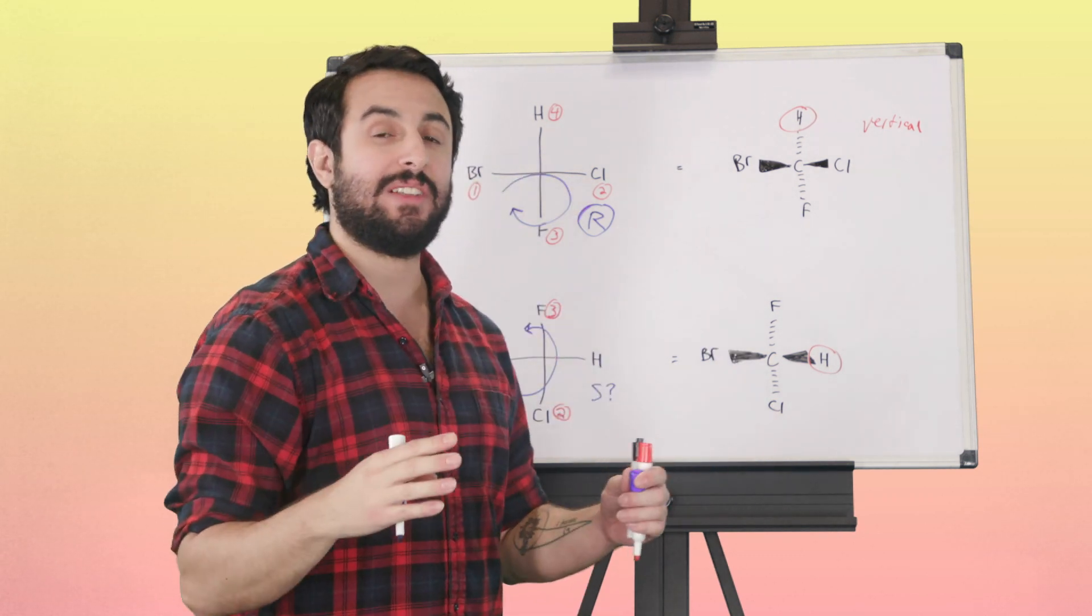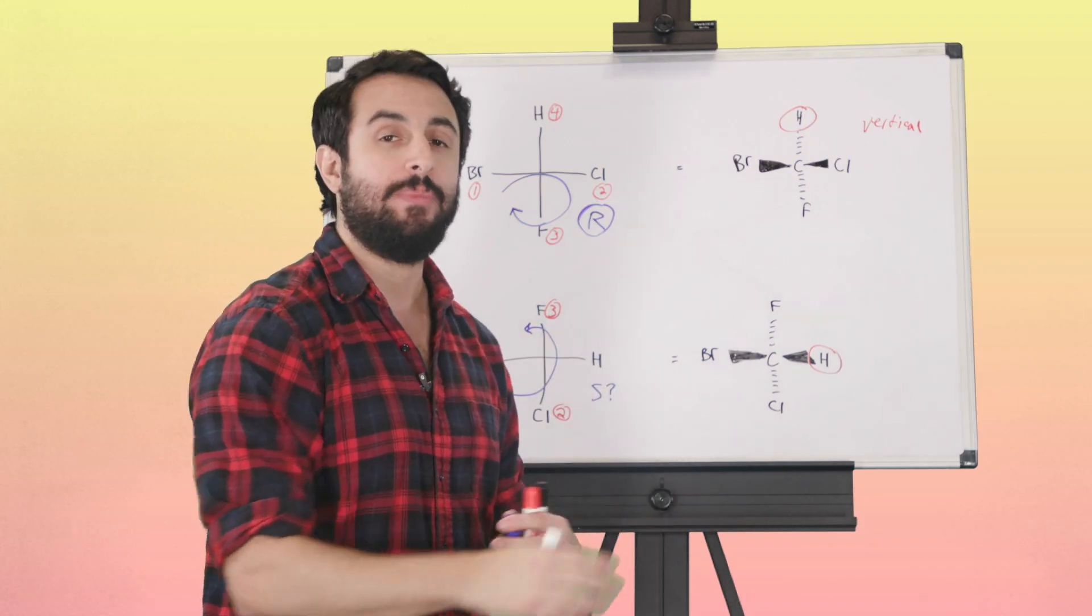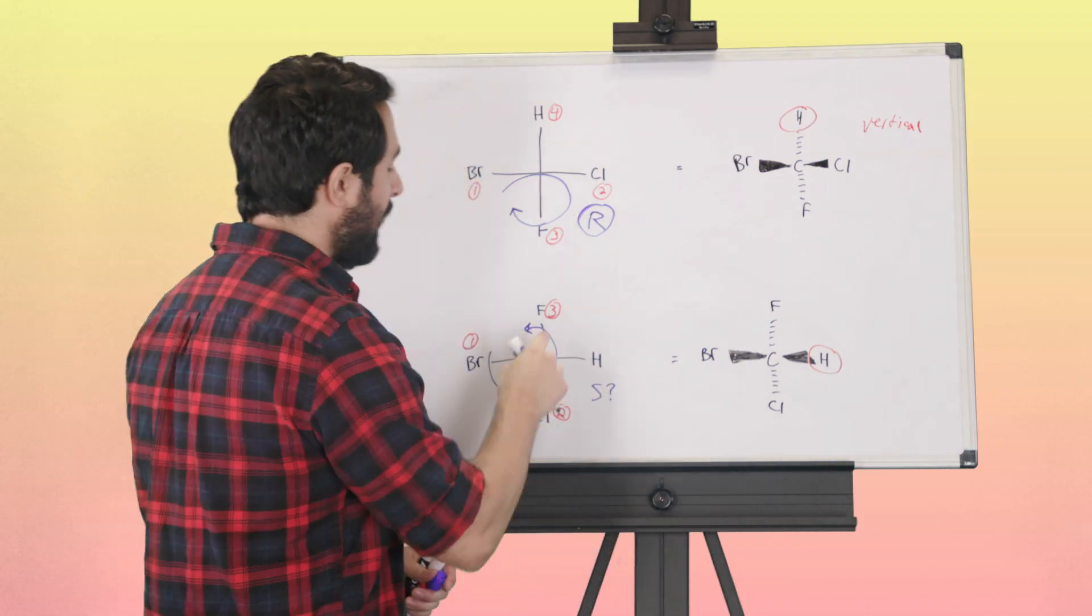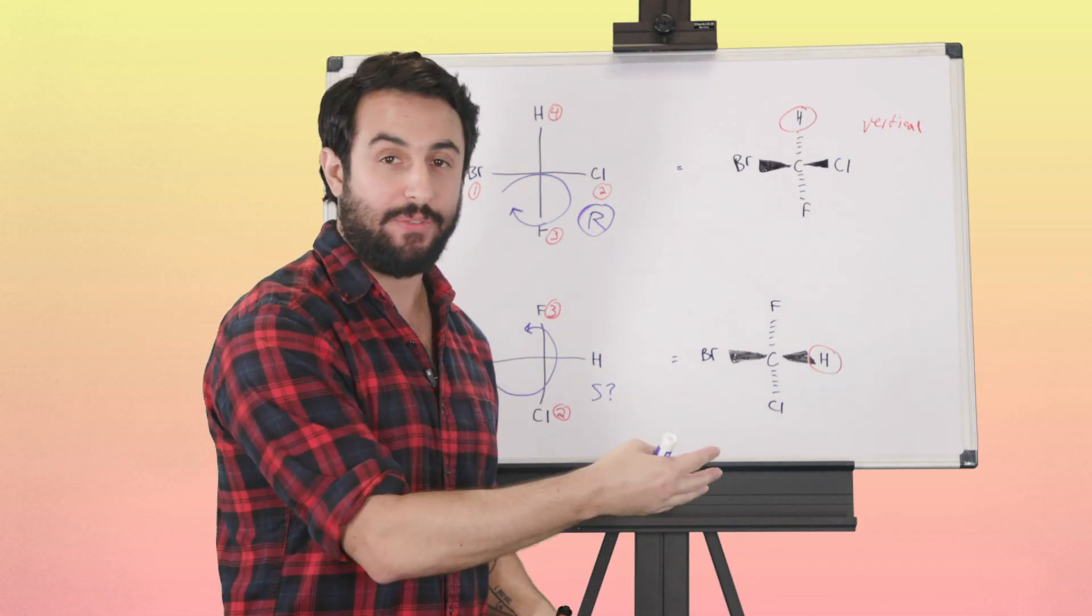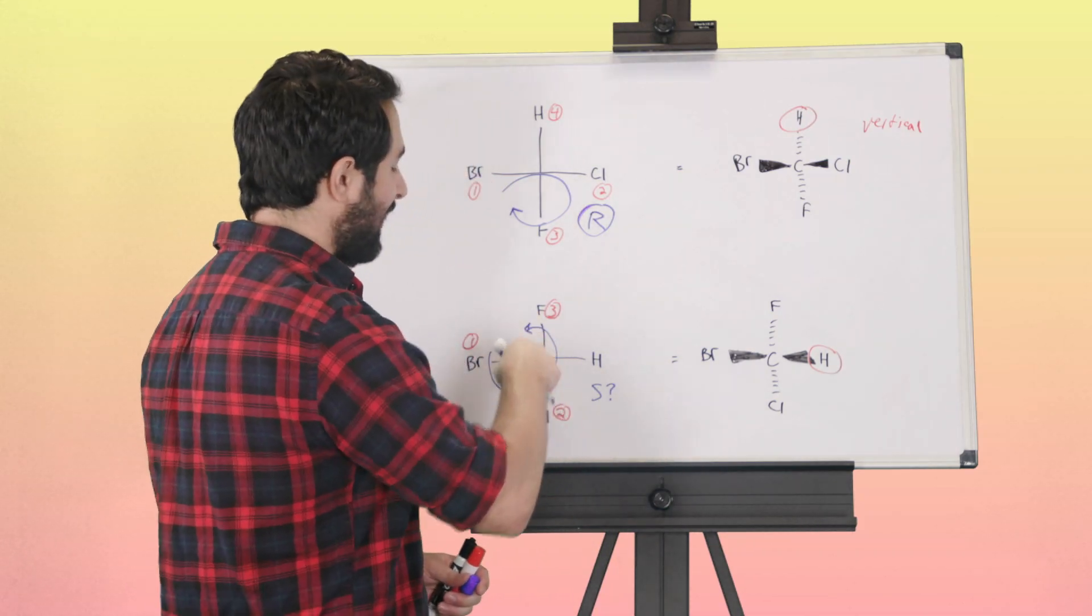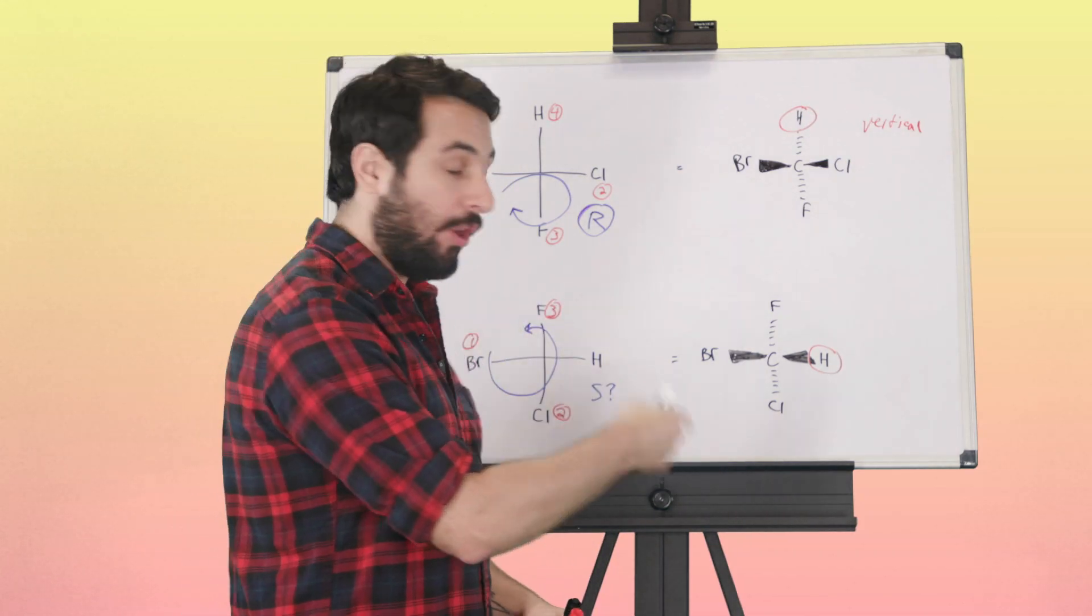However, in doing so we would invert the stereochemistry. The way that we can account for that is we can simply pretend that hydrogen is away from us, assess it as is, and then invert our answer.